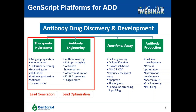In the antibody drug discovery process, multiple in vitro and in vivo functional assays are needed to characterize and screen for functional antibodies from numerous binders. After an optimized lead is obtained, transient or stable expression of lead antibodies is performed for producing large amounts of material for further efficacy, toxicity, stability, and durability studies required for IND filing.